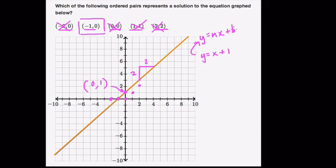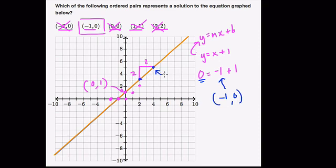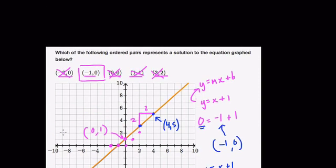If we plug in the point negative 1, 0 — negative 1 is x — it's negative 1 plus 1, which equals 0. So y equals 0, giving us the point negative 1, 0. Take another point on the line, like 4, 5: y equals x plus 1, plug in x equals 4, and you get 5. So any point on the line will work for that equation — any point on a line is a solution for that line.